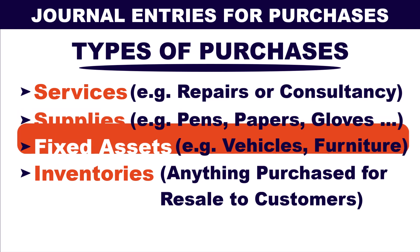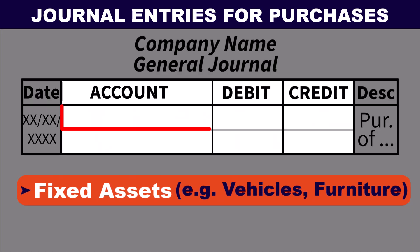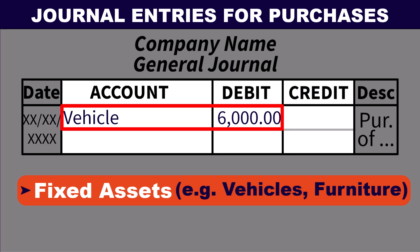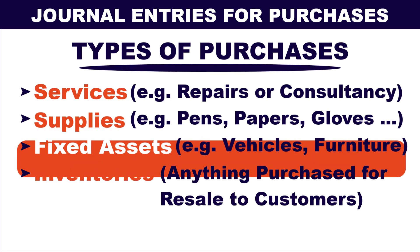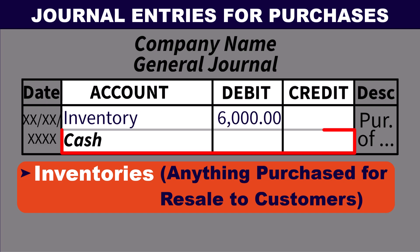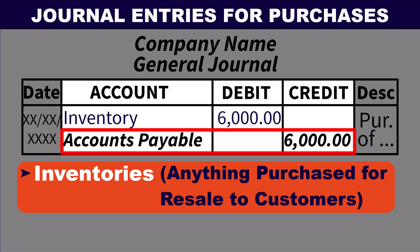And now let's see fixed assets. Here, no expense is debited. Instead, we debit the asset account. For example, if the purchased item is a vehicle, we debit vehicle, which is an asset account, and credit cash if it is a cash purchase, or credit accounts payable if it is a credit purchase. Moving to purchase of inventories: we debit inventory and credit cash for a cash purchase, or credit accounts payable for a credit purchase.